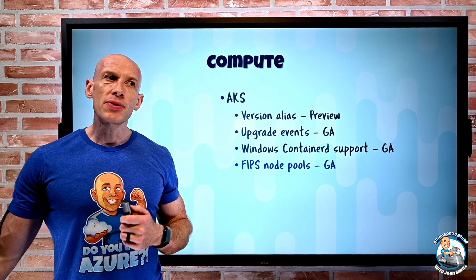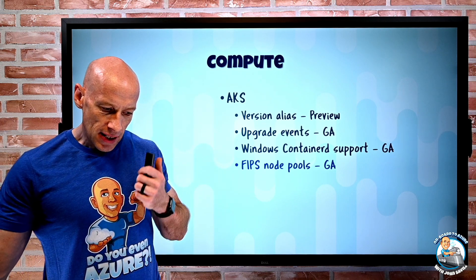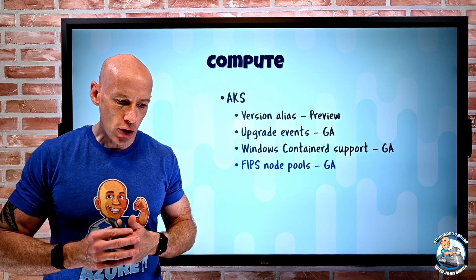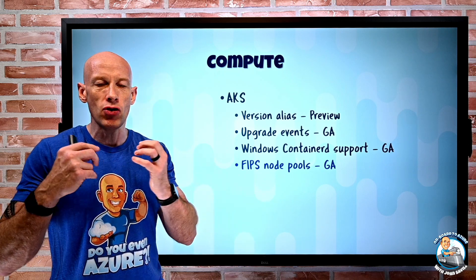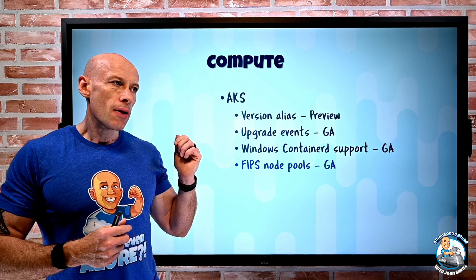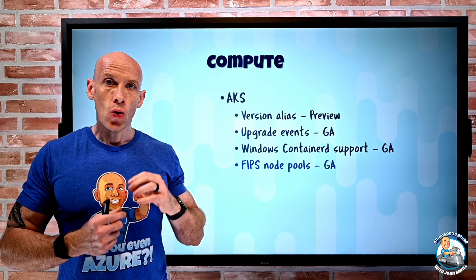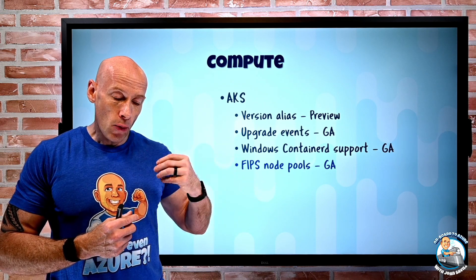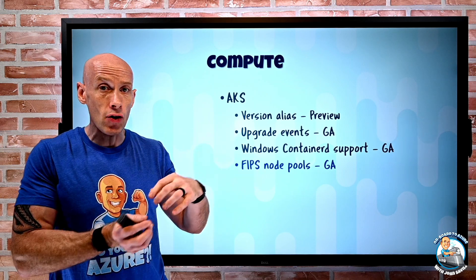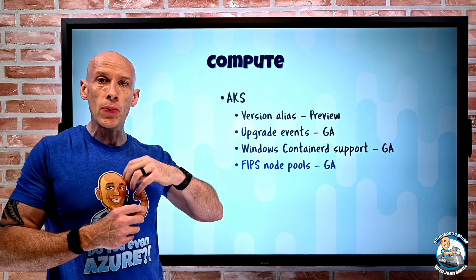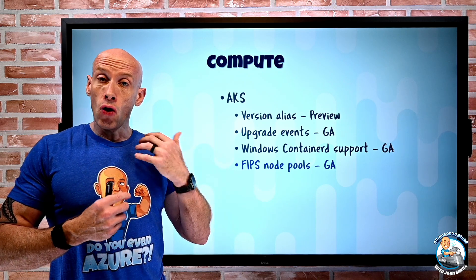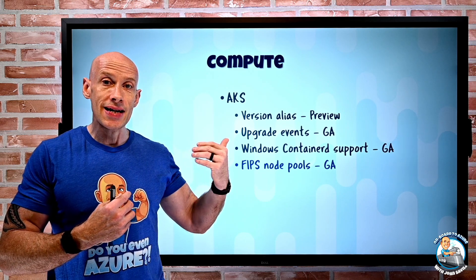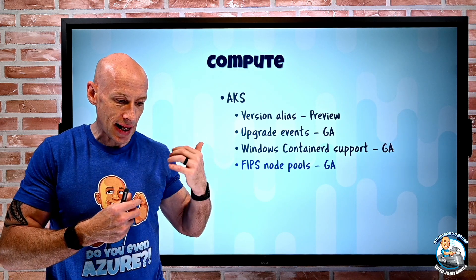There's now support for FIPS node pools. FIPS is the Federal Information Processing Standard — you'll hear about 140-2 for US government standards around encryption and cryptographic modules. For Linux nodes only, when I create a new node pool I can specify I want it to be FIPS 140-2 enabled. I cannot set it on an existing node pool — only at creation time. I can also specify it as the default node pool at time of AKS cluster creation, but again I can't set it after the fact.